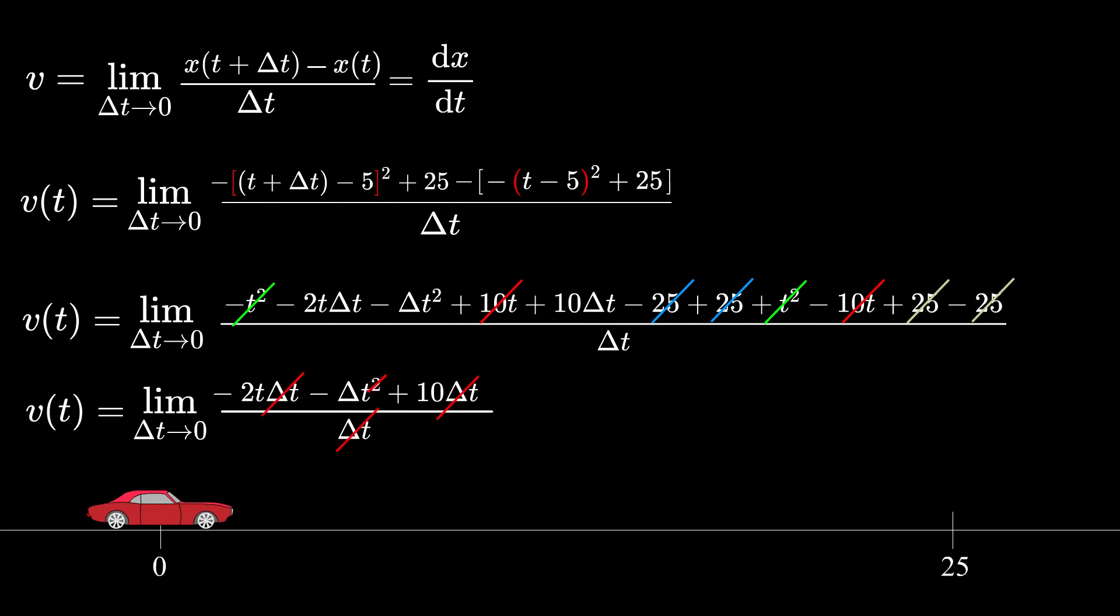Now we can cross out delta t's and we get this expression. Now if we take the limit as delta t goes to zero, we have the following result for the velocity function.